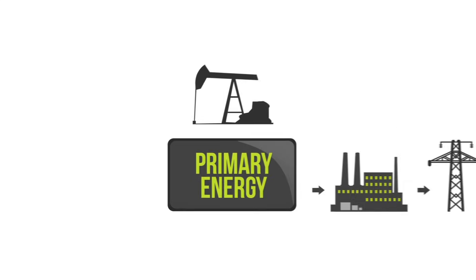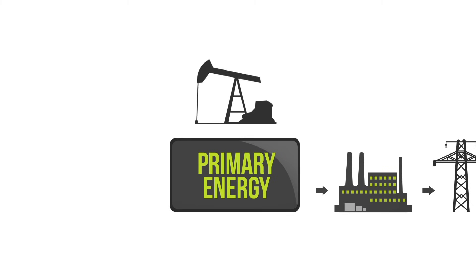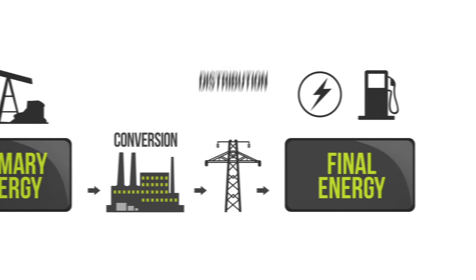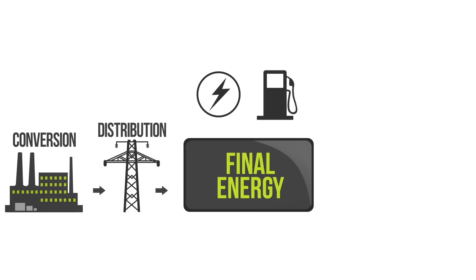Resources are extracted and processed to give us primary energy. This is a raw form of energy, for example, natural gas. Primary energy then undergoes conversion and distribution to become final energy. Final energy is a usable form of energy, such as electricity or transportation fuel.